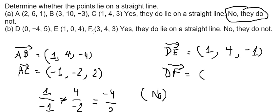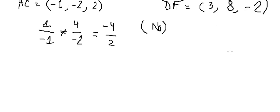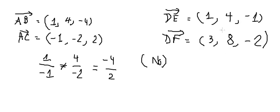Similarly for the next vector: 3 minus 0, you get 3; 4 minus negative 4, you get 8; and 3 minus 5, you get negative 2. We do the ratio, and they are not the same. So the answer is no — the points are not on the straight line.